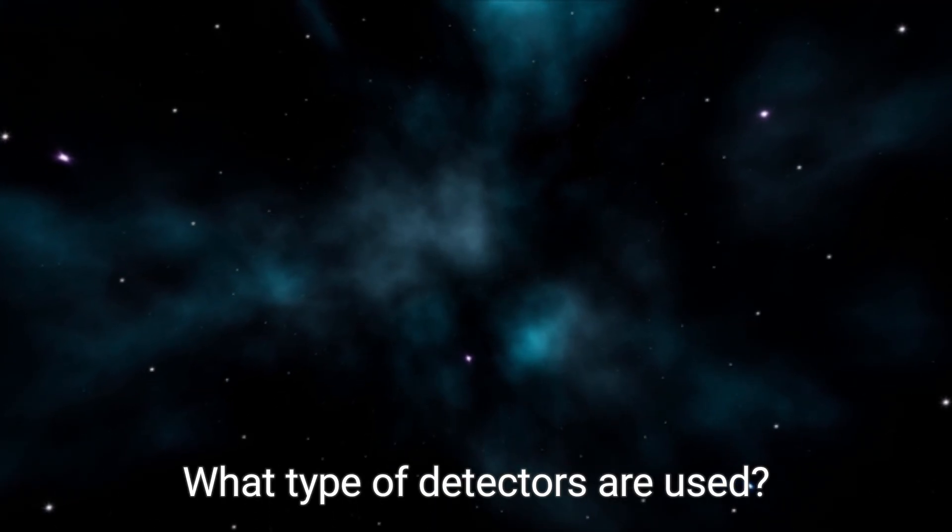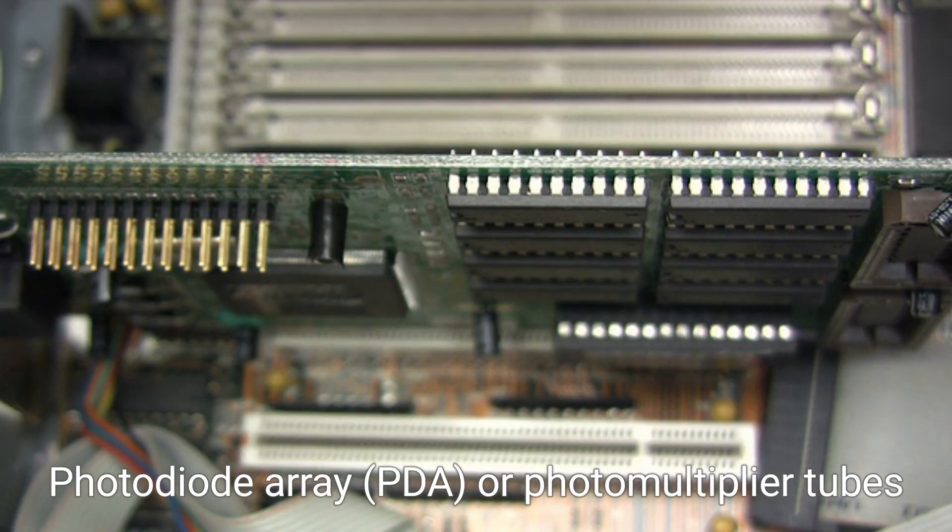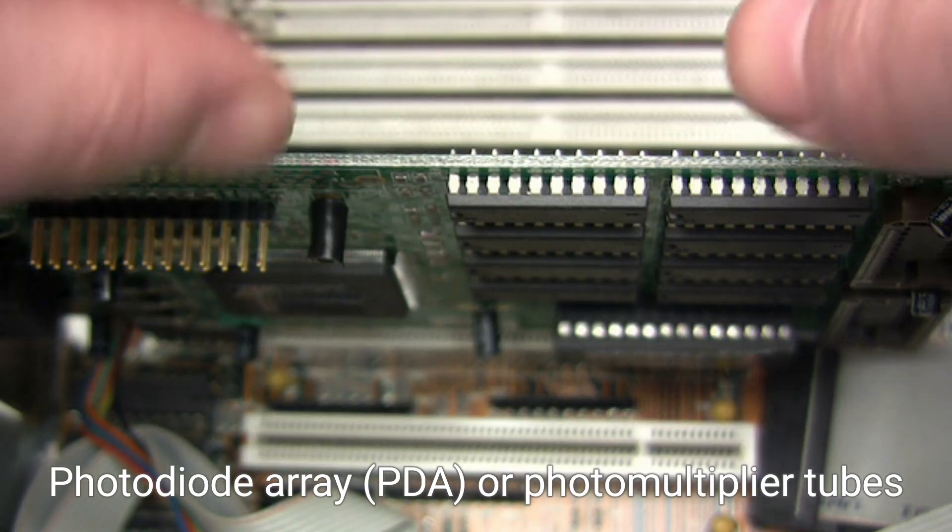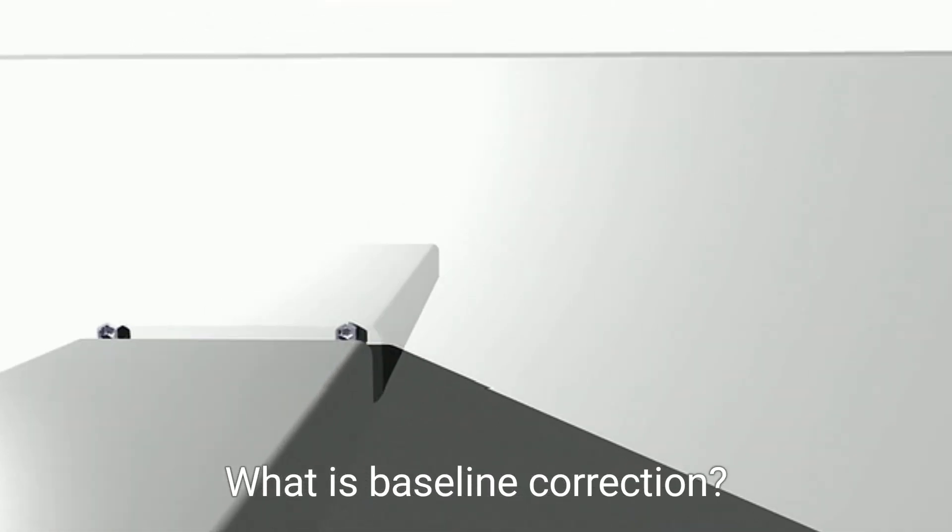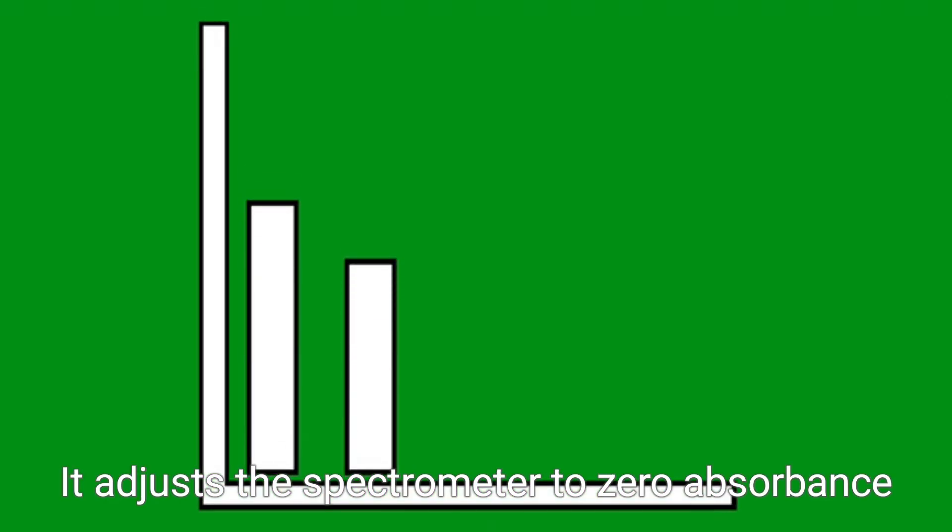What type of detectors are used? Photodiode array PDA or photomultiplier tubes PMT. What is baseline correction? It adjusts the spectrometer to zero absorbance with a blank, ensuring accurate reading.